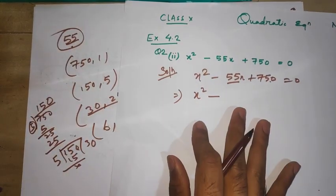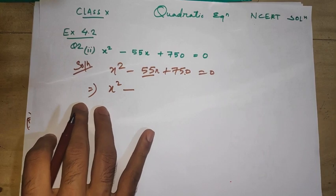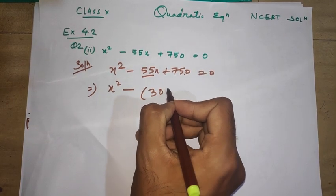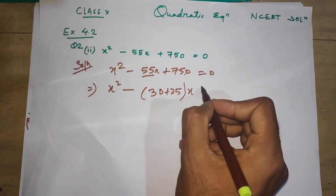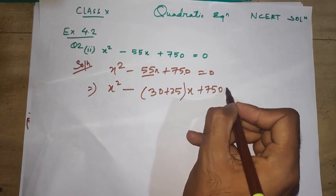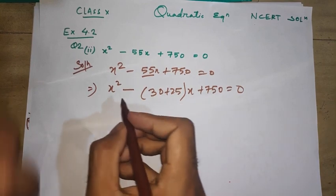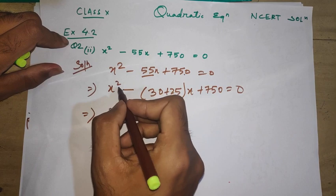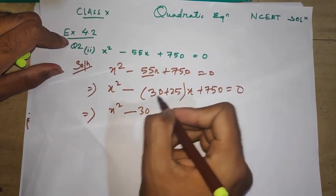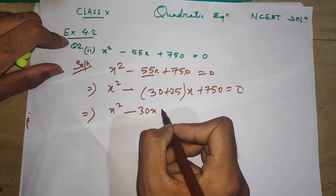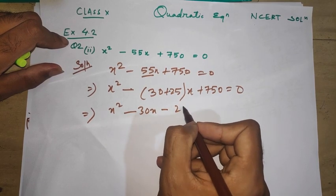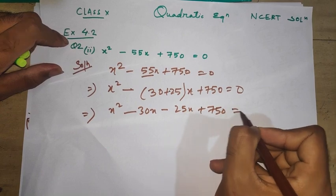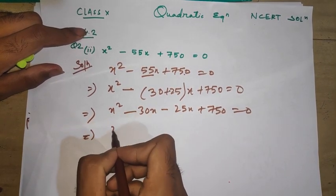x² - you see we got 30 and 25. I'm going to write inside brackets so you won't make any mistake. x² - 30x - 25x + 750 = 0.